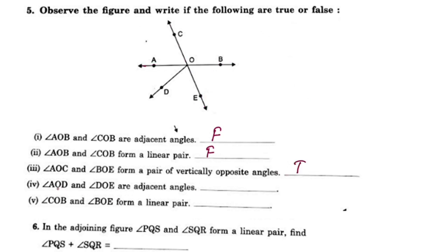Next: angle AOD and angle DOE are adjacent angles. AOD is this angle, and these two angles share a common vertex and are adjacent angles on two sides. This statement is true.